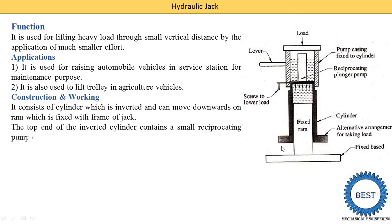The top end of the inverted cylinder — this inverted cylinder is the inverse of a U shape — contains a small reciprocating pump. So here it is a small reciprocating plunger pump, and this is the casing of the pump. This pump is operated by using a lever outside the casing. So here you see the levers — by using these levers, this hydraulic jack is operated.